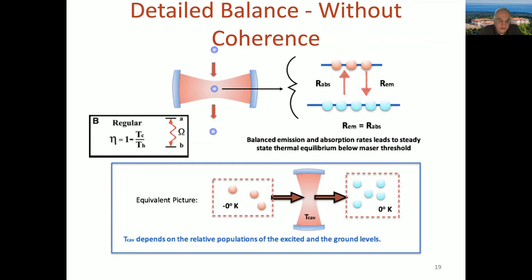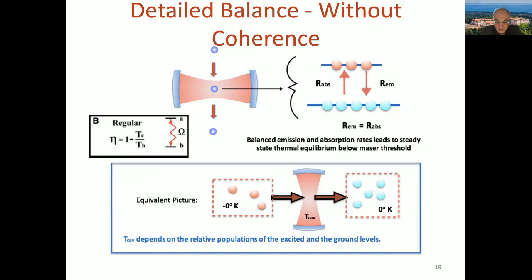You can write down a master equation by taking the coupling rates of the two baths as the populations of the excited and ground states, solve it, and show that the cavity field is thermal with temperature determined by the coupling rates. There's a so-called detailed balance principle in quantum open systems: the ratio of transition rates between ground and excited states is given by the Maxwell-Boltzmann factor, exp(-ΔE/T). When mapped to the open system with negative and positive zero temperatures, you recover this detailed balance picture exactly.